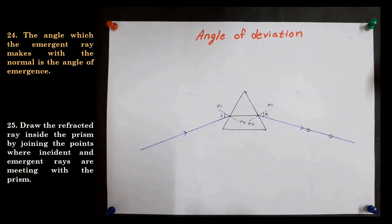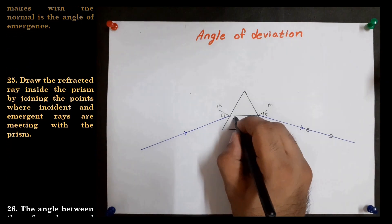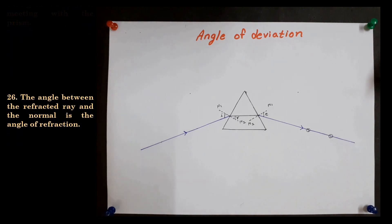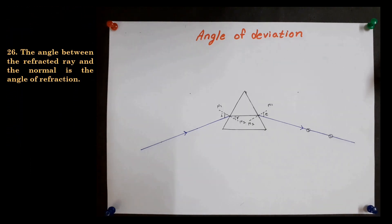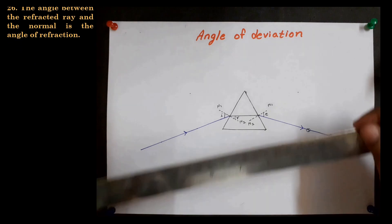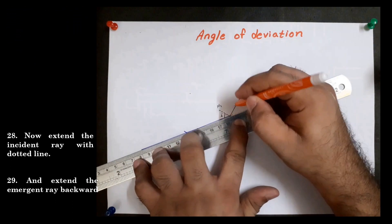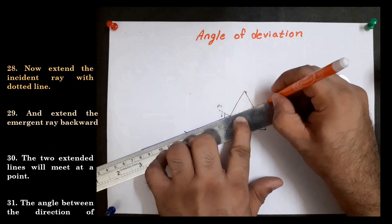Draw the refracted ray inside the glass prism by joining the points where incident ray and emergent rays are meeting with the marked prism. The angle between the refracted ray and the normal is the angle of refraction. Now extend the incident ray with dotted lines and also extend the emergent ray backward.